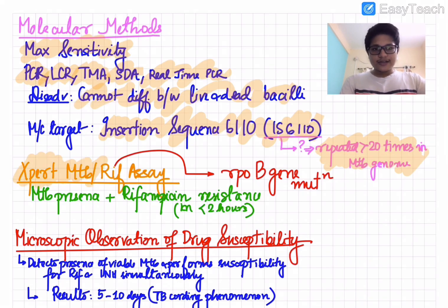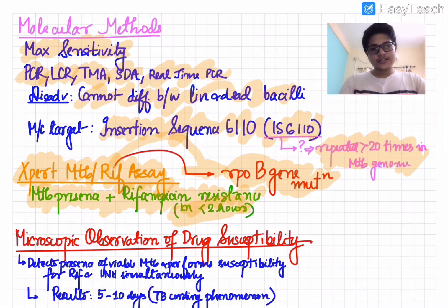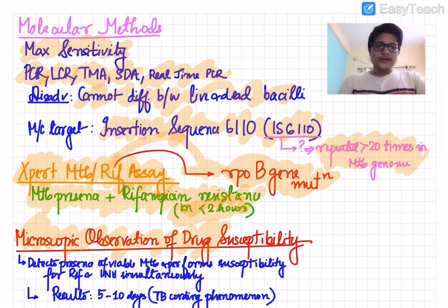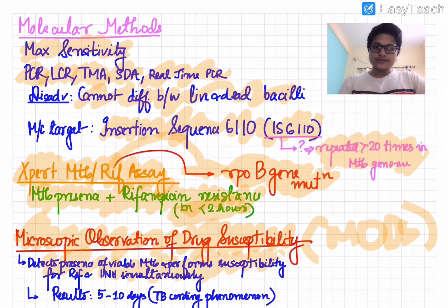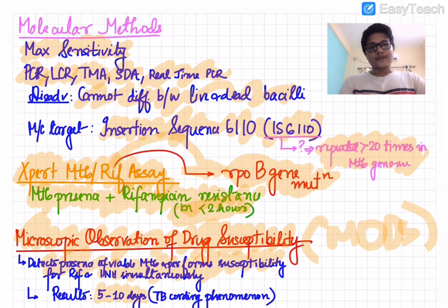The GeneXpert MTB/RIF assay simultaneously detects the presence of Mycobacterium tuberculosis bacilli and whether it is rifampicin resistant, within less than 2 hours. Rifampicin resistance detection uses nucleic acid probes against the rpoB gene — rpoB gene mutation confers rifampicin resistance. Another technique is MODS (Microscopic Observation of Drug Susceptibility), which detects viable bacilli and performs susceptibility testing for both rifampicin and isoniazid in a single test, though it takes 5–10 days.